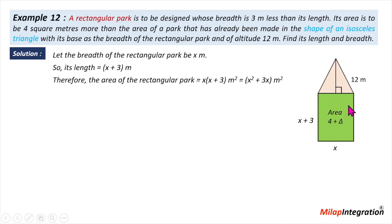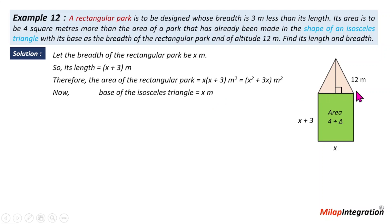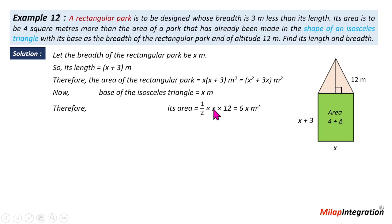The base of the isosceles triangle is x meters and the height is 12 meters. The area of the triangle will be half times base times height, that is half times x times 12, which equals 6x square meters.